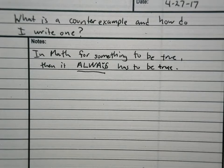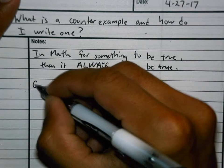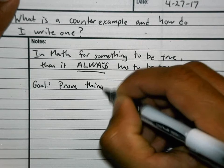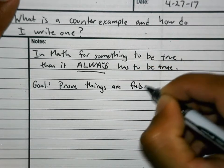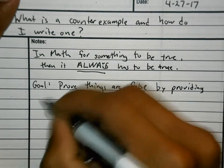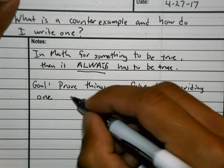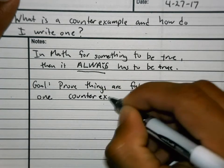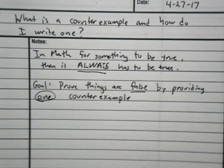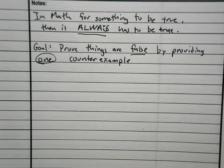What we're going to be doing is we're going to be trying to prove things false. We're going to be trying to prove things false by using a counter example. Our goal is to prove things are false by providing one counter example. How many? One.